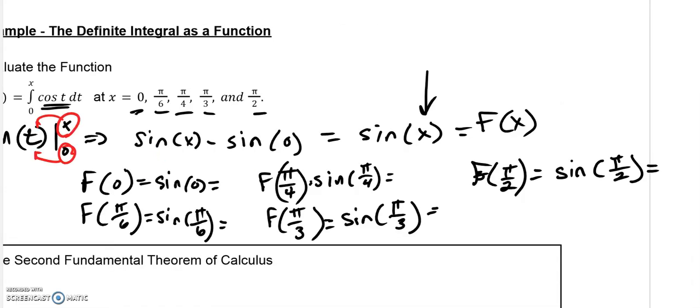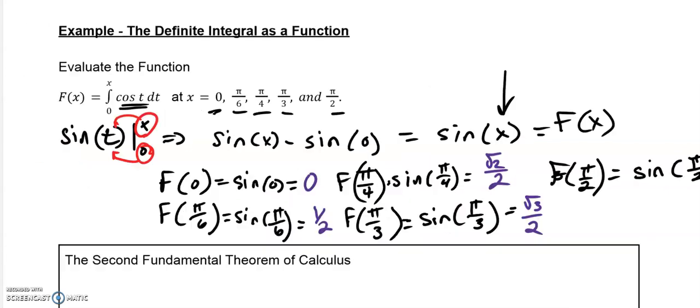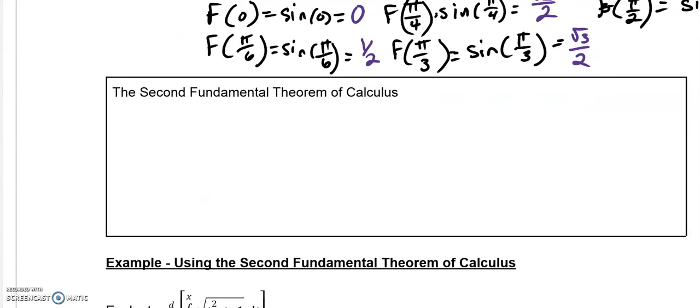Follow up, and you plug those values in for sine. So, the sine of 0, well, we already did that there, but the sine of 0 is 0. Sine of pi over 6 is 1 half, and sine of pi over 4 is radical 2 over 2. Again, review your unit circle if you're struggling with this. And the sine of pi over 3 is radical 3 over 2. And the sine of pi over 2 is just 1. So we made it into a function and evaluated different parts of that. That's what the second fundamental theorem of calculus talks about.